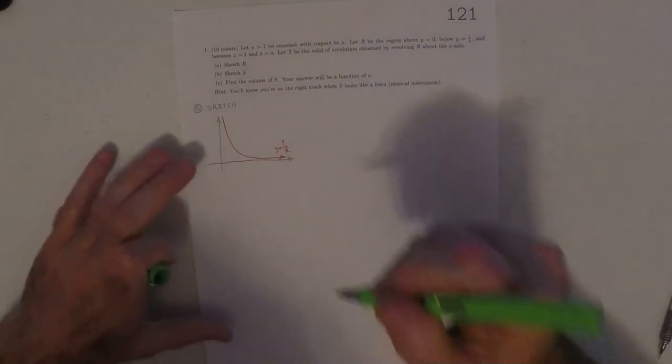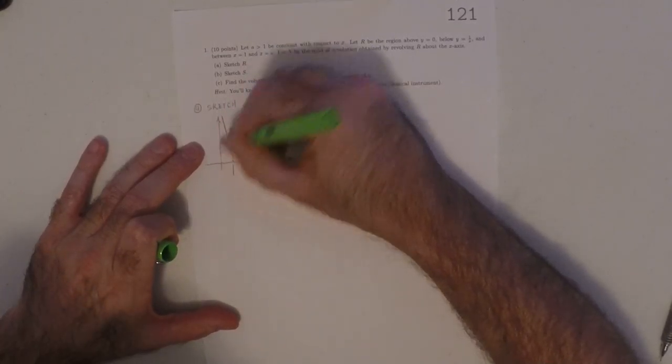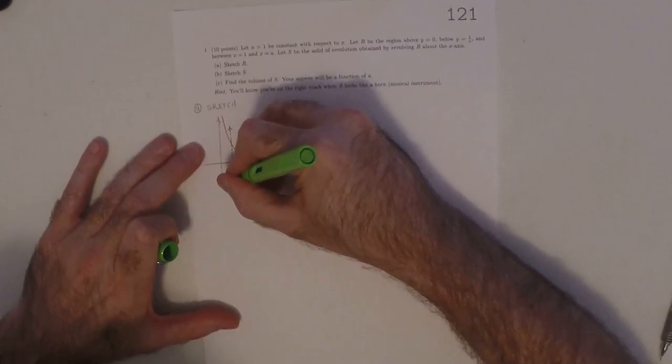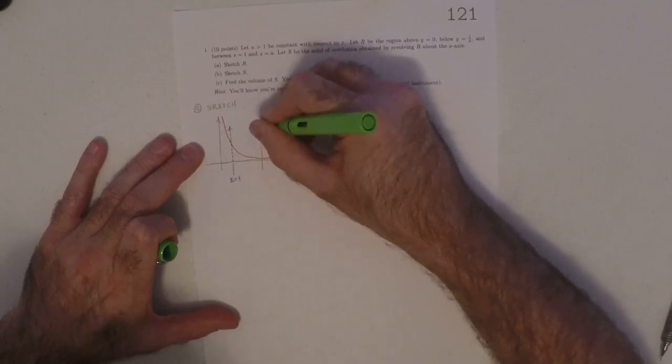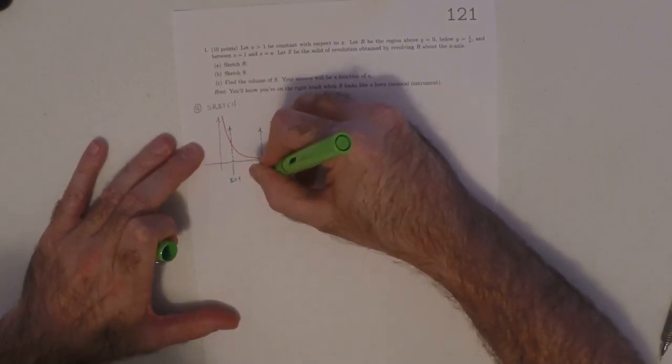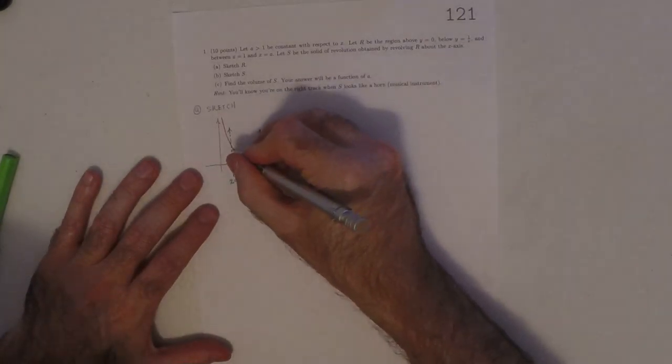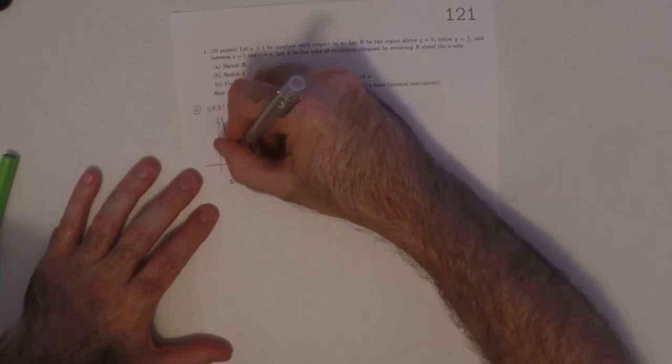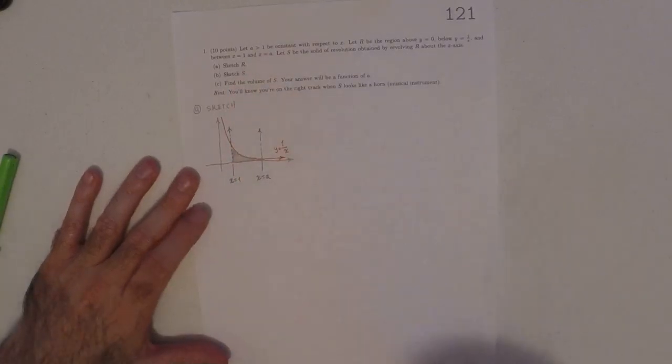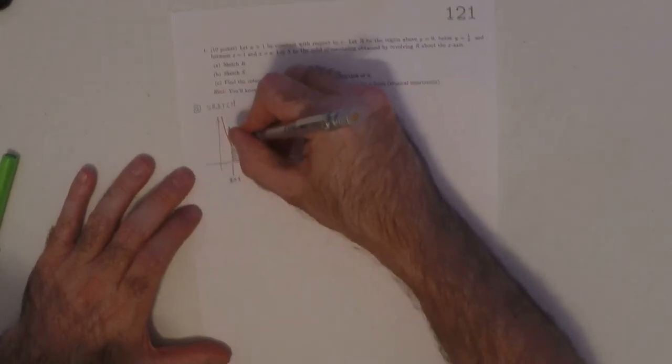And then X is 1 and X is A looks like this. So this could be approximately X is 1. And somewhere over to the right is X is A. And R is the region right there. So that's A. So this is the region R.